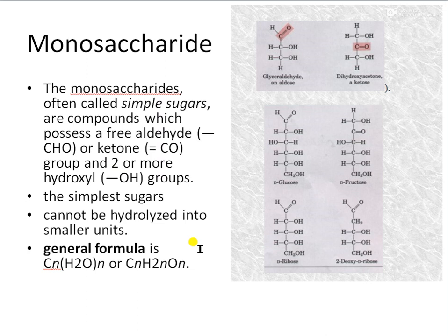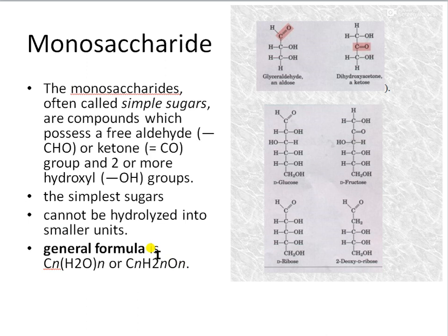Now let us go into some basics. Monosaccharides are considered to be simple sugars. They will either have an aldehyde group or a ketonic group, and they will also have two or more hydroxyl groups attached to them, along with hydrogens to maintain valency. They have a general formula of CnH2nOn. The most common monosaccharides are glucose and fructose.